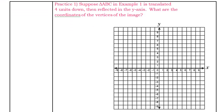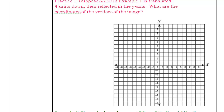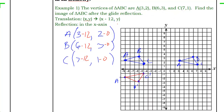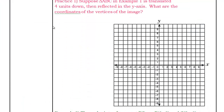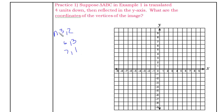Example 2 takes that same triangle — A(3,2), B(6,3), C(7,1) — and translates it 4 units down, then reflects it in the y-axis. I'll plot A, B, and C again and connect the segments AB, BC, and AC. Start getting in the habit of labeling all your points — geometry is very specific in its notation.